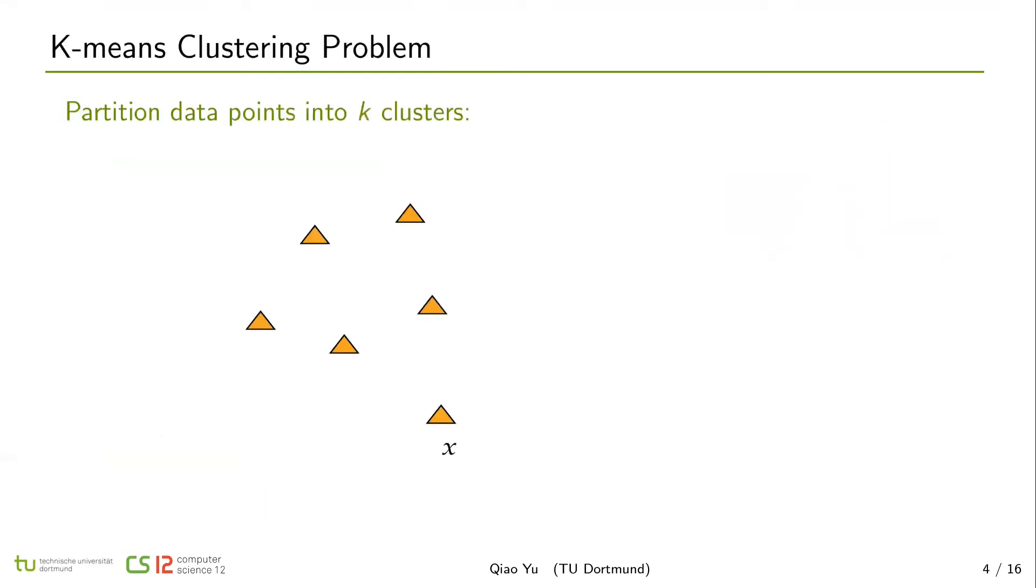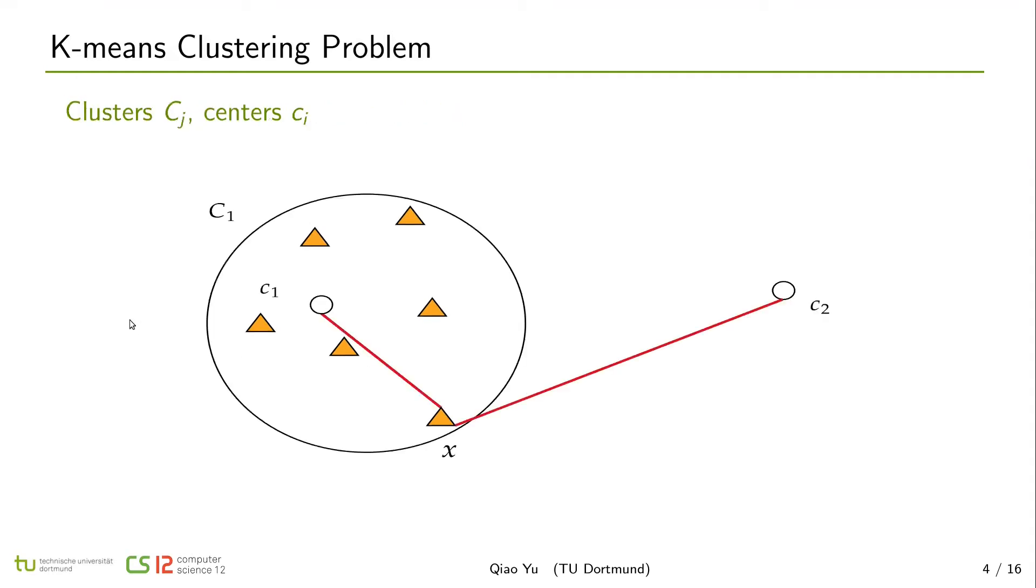Here is a very simple example of k-means clustering. Given a set of data points, we initialize k centers, like c1 and c2. And then, each point will calculate distances to each center, like x to c1 and x to c2.